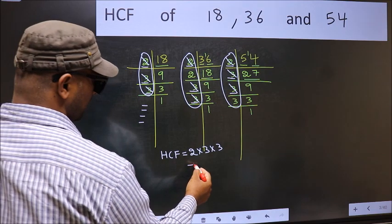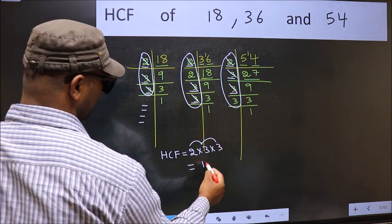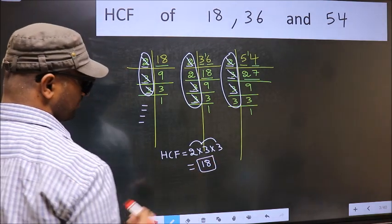No more numbers have been left out. So our HCF is 2 times 3, which is 6, times 3, which is 18. Therefore, 18 is our HCF.